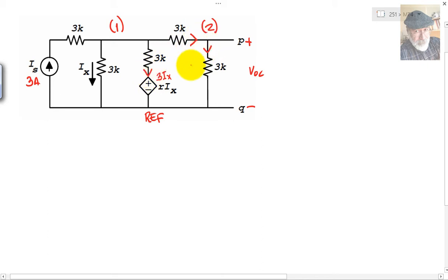And then we identify any CTL equation, control equation, of course, Ix, this one. That CTL equation is V1 divided by 3 kilos, that is Ix.